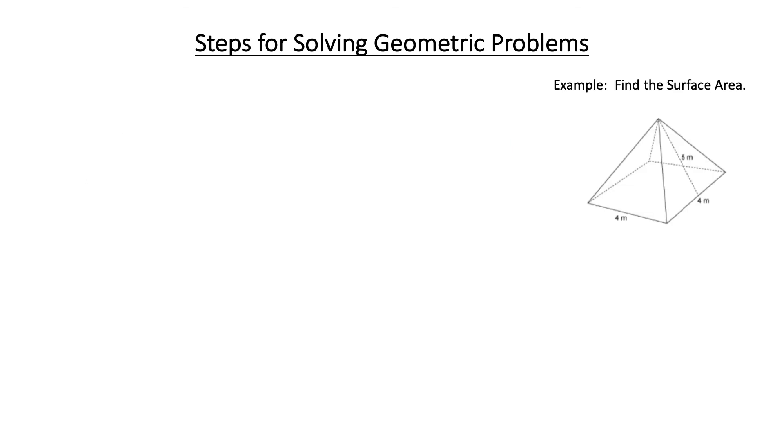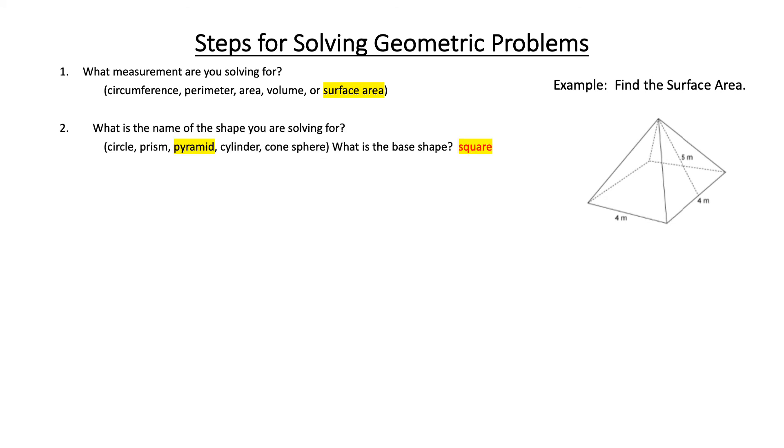This next problem says to find the surface area. So first, we see that the measurement we're solving for is surface area. We look at the shape and see it's a pyramid with a square base. So we go to our formula sheet and find surface area, square-based pyramid. When we write down the formula, we see we get area of base plus 1 half times perimeter of the base times the slant height.